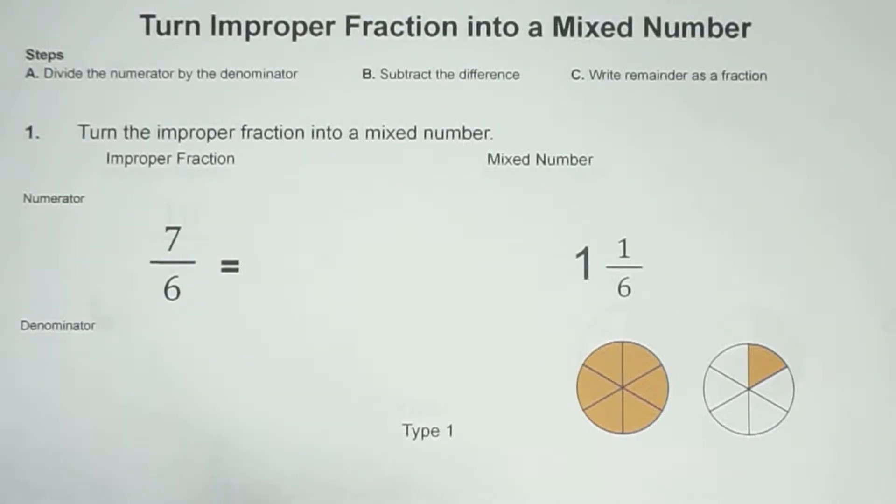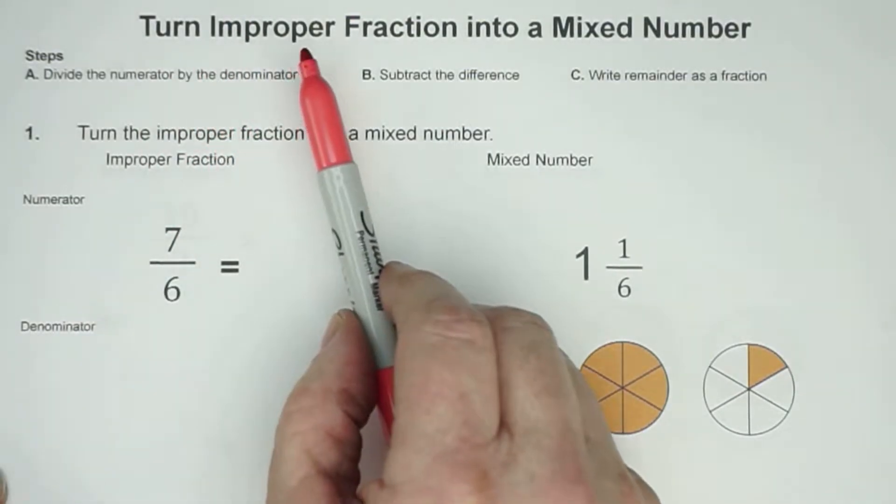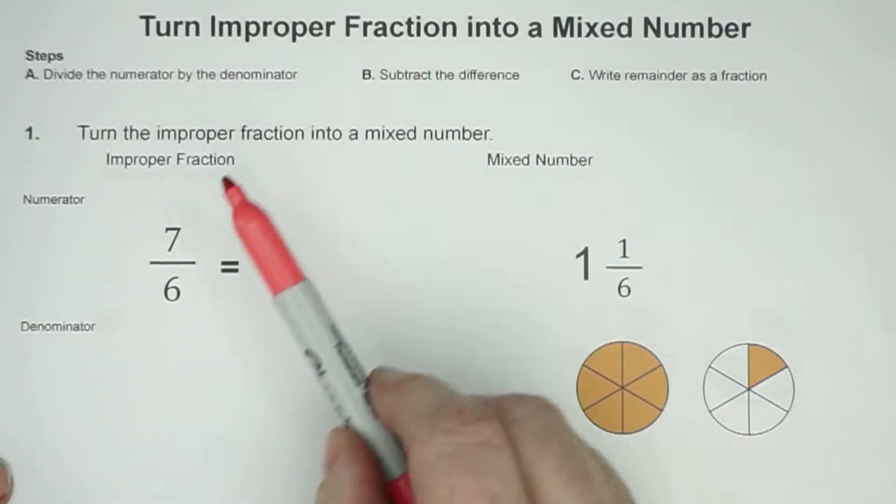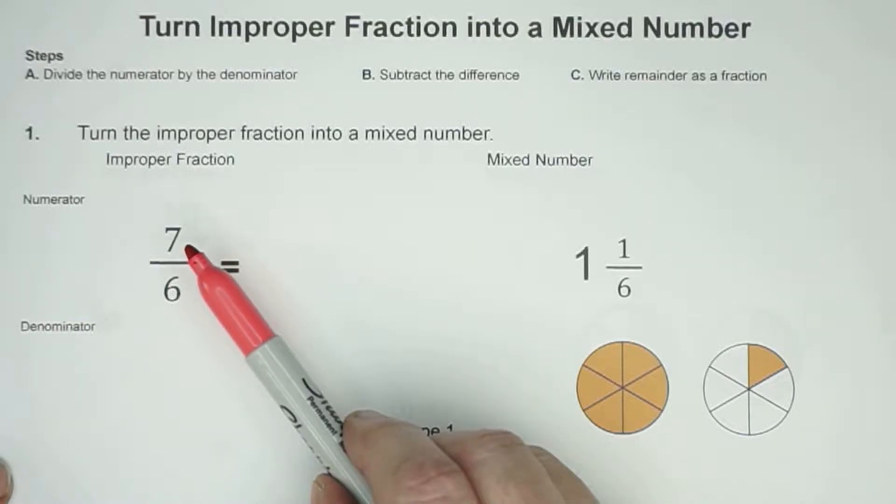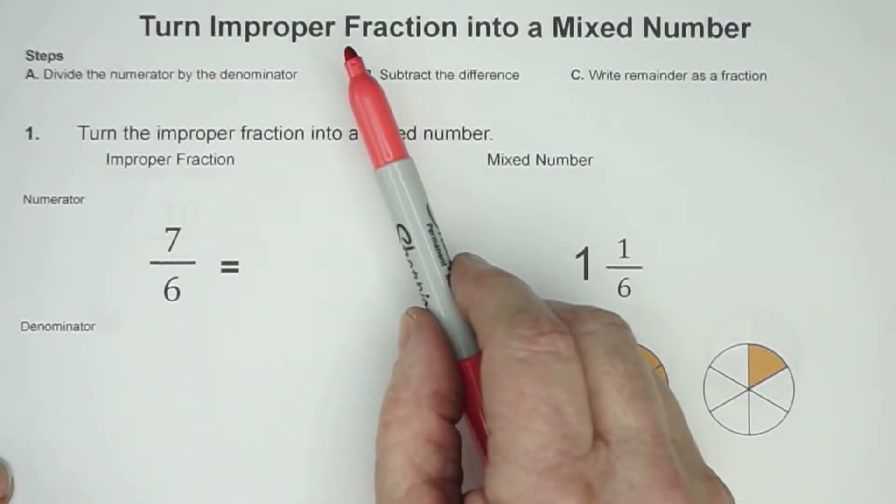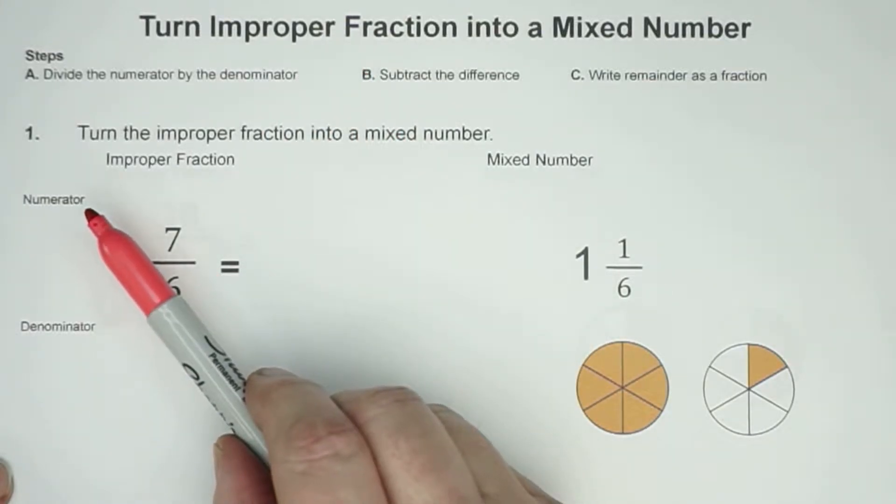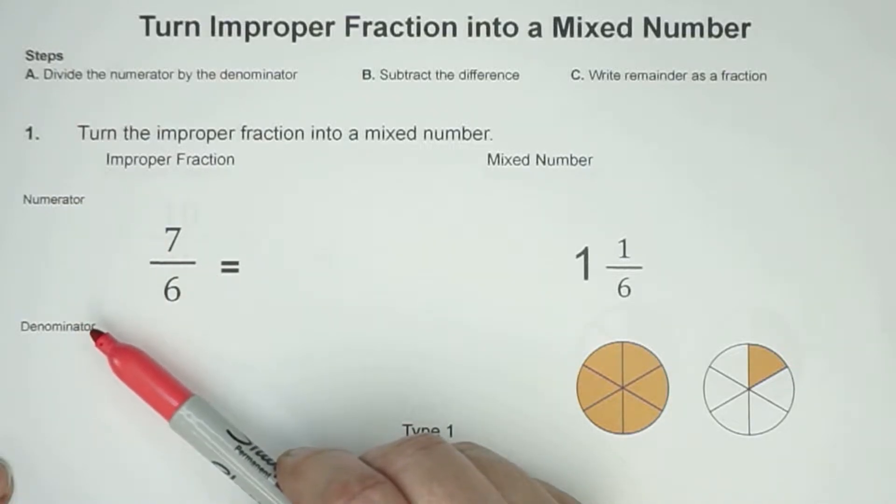Hey everyone, Mr. W here. Today's lesson is how to turn an improper fraction into a mixed number. An improper fraction, an example of that is right here. 7/6 is called an improper fraction because an improper fraction is when you have your numerator is greater than a denominator.